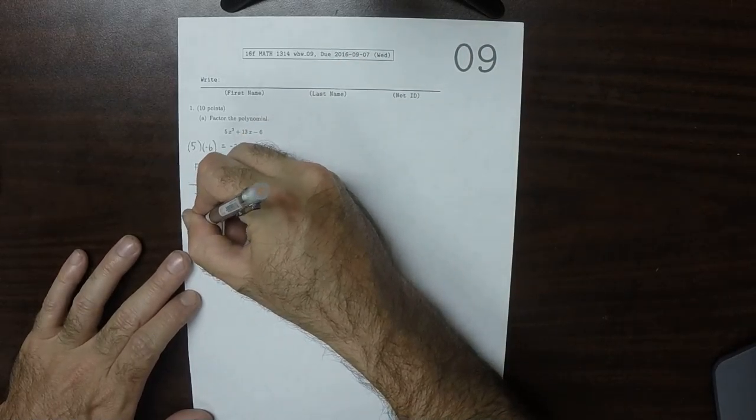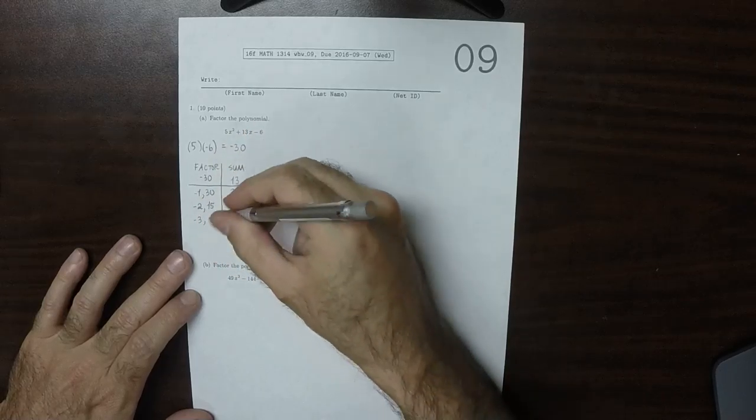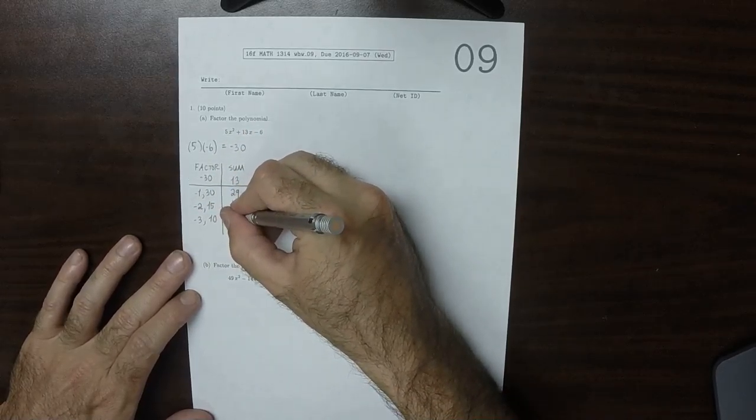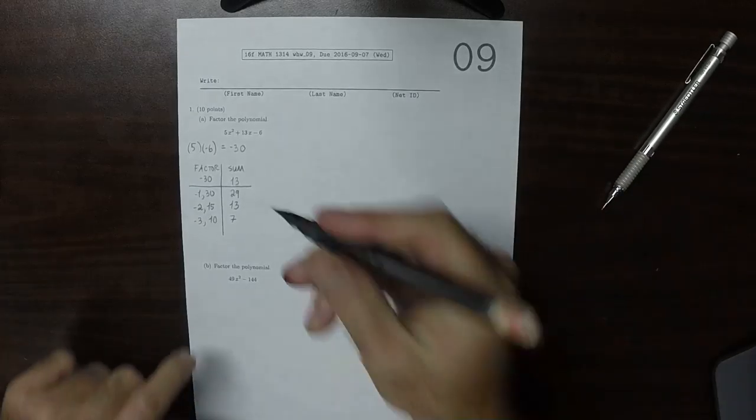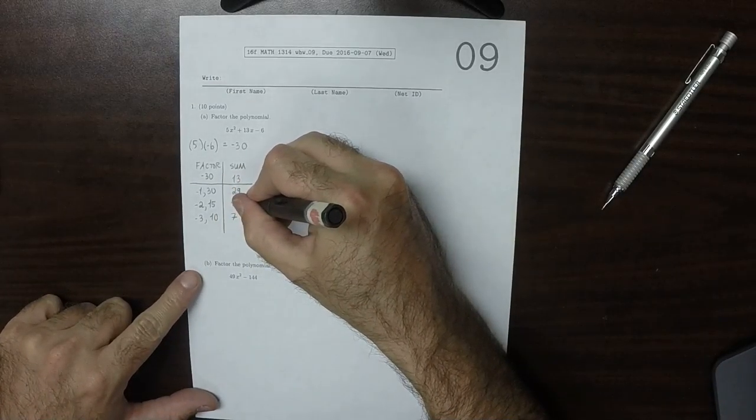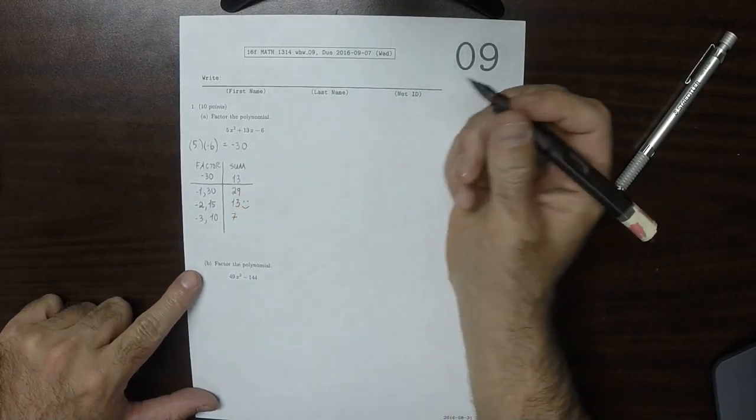But if we hadn't found it, then we could keep trying others, like the sum of negative 3 and 10, that's 7. That's not what we're looking for. So then we found 13. We're so happy about having found 13.